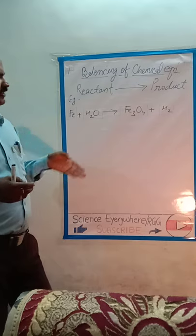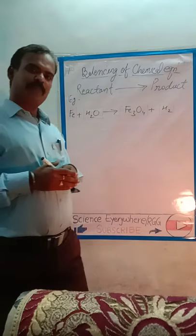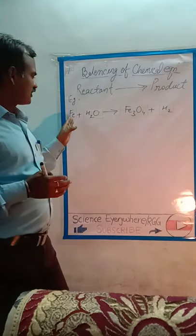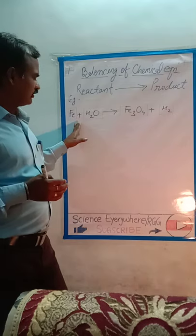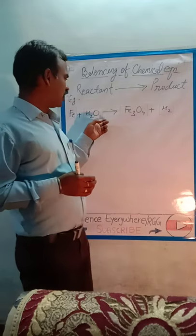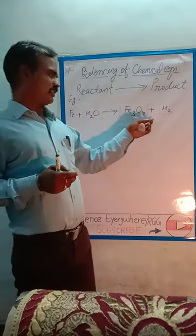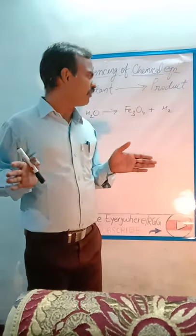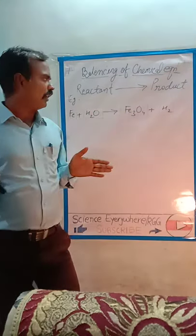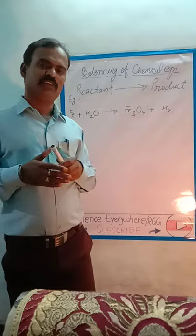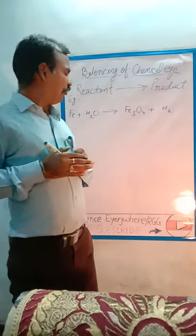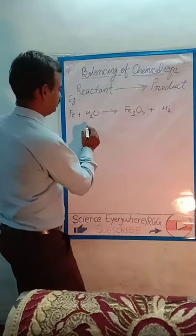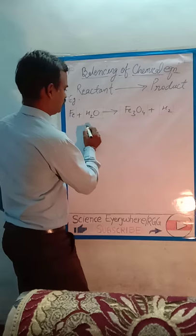To balance this chemical equation, you have to make a circle or box around each reactant and product. Then follow a set of steps for balancing. Step number one: make a table like this.